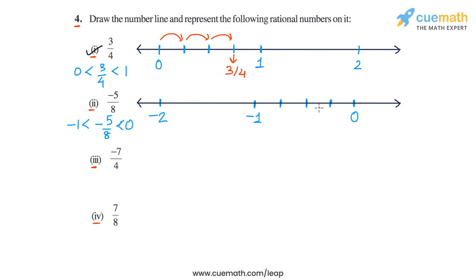Splitting an interval in half is easy, so that's why we do it this way. Now you have divided minus 1 to 0 into four equal parts. Next, divide each of these four parts into two equal parts again, so now you have divided the interval between minus 1 and 0 into eight equal parts.